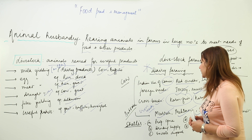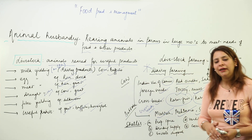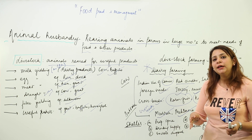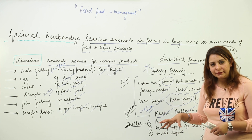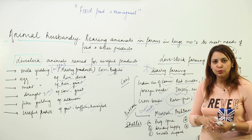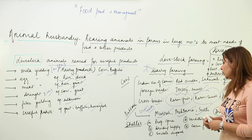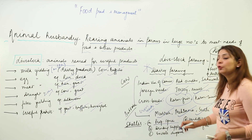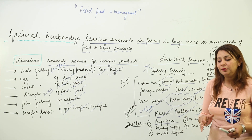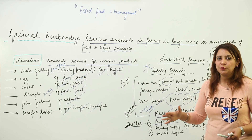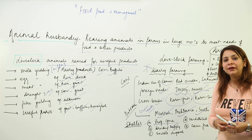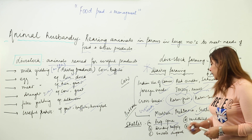Now that you know about breeds, when rearing animals you need to keep them in a shelter. The shelter should fulfill certain characteristics because it plays an important role. The shelter should have appropriate space — proper spacing must be maintained, overcrowding should not be there, and each animal should get proper space to live. There should also be a clean drinking water supply.